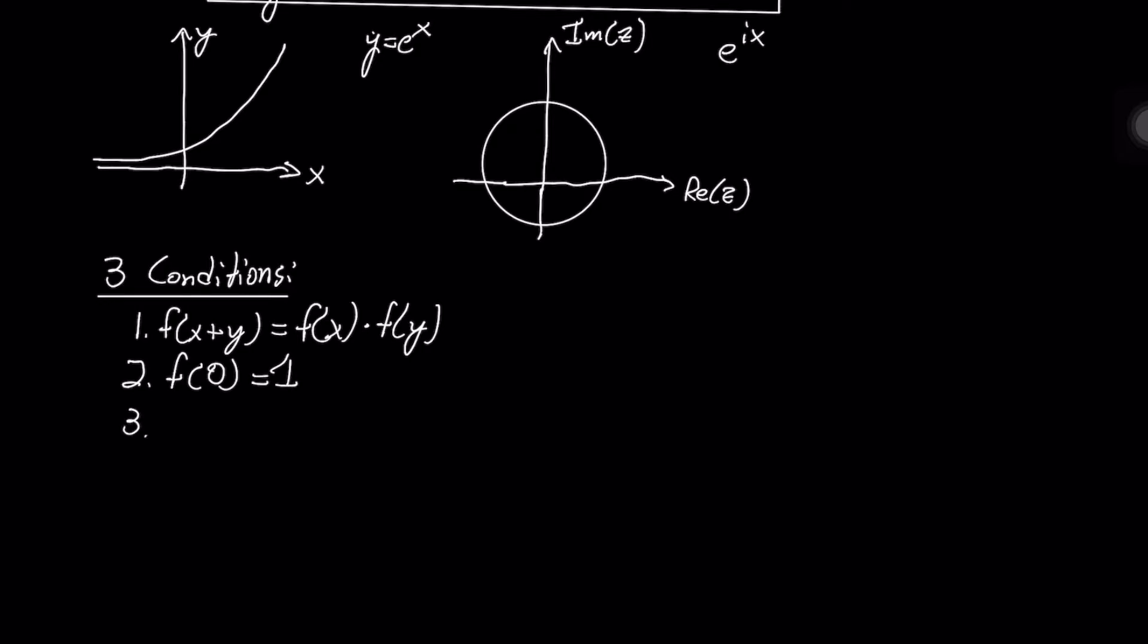which you can verify easily, f of 0 equals 1, and f prime of x is some constant a times f of x.